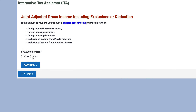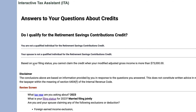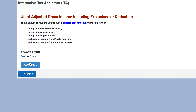The tool then asks: is the amount of your adjusted gross income plus these exclusions added back $73,000 or less? If no, then you can't claim the credit. Let's go back and change that answer to yes.